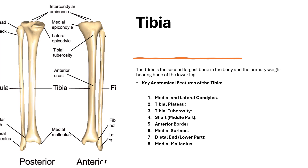The tibia is the second largest bone in the body and the primary weight-bearing bone of the lower leg. It supports most of the body's weight during standing, walking, running, and other movements.